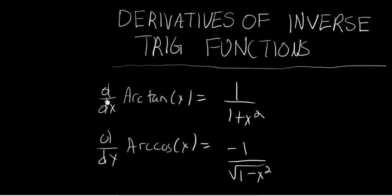So far in our discussion of the derivatives of inverse trig functions, we found that the derivative of the arctangent function, arctan of x, is 1 over 1 plus x squared, and that the derivative of the arccosine function is minus 1 over the square root of 1 minus x squared.